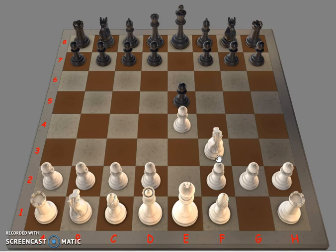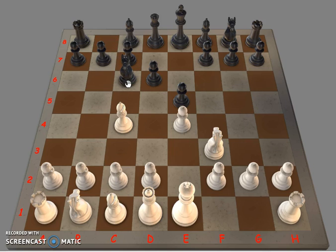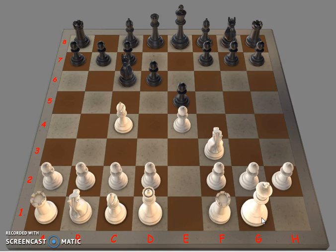The game continued knight to f3, and as I mentioned it was a Philidor defense so d6. Bishop to c4. Now notice that she's already ready to castle. Black played knight to c6. She immediately at the first possible opportunity castled.